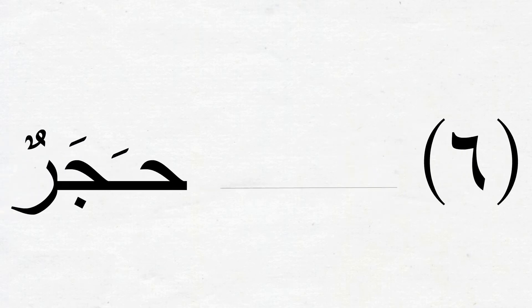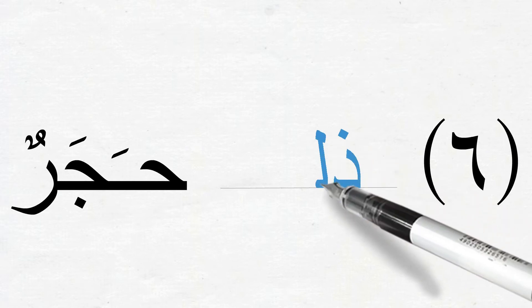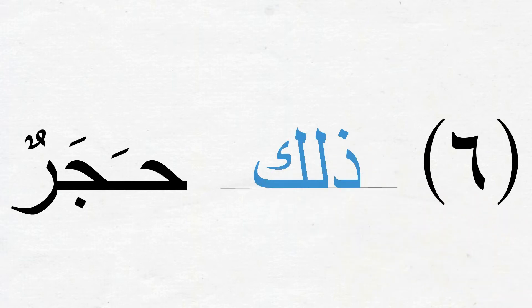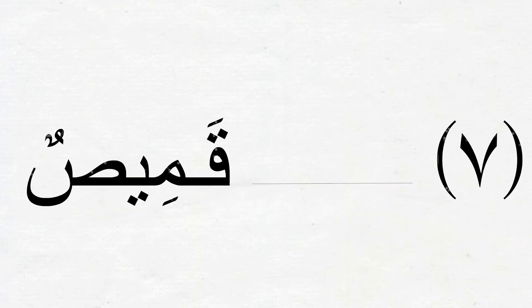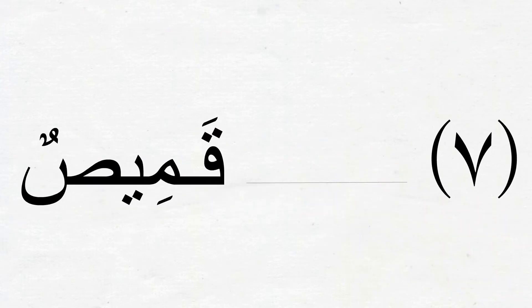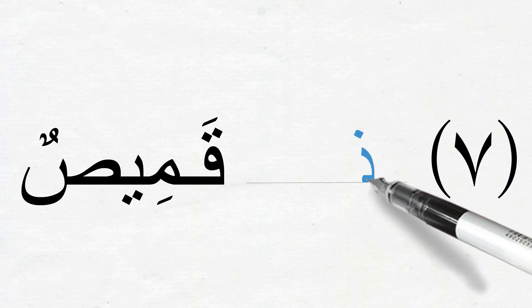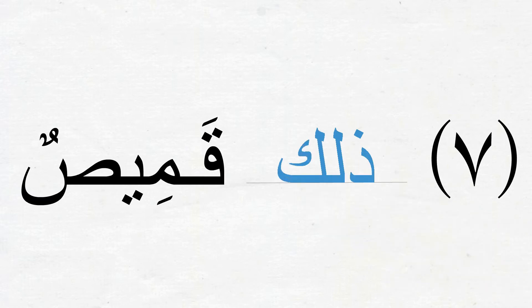Number 6: حَجَرٌ means 'a stone'. With حَجَرٌ we will use ذَٰلِكَ — ذَٰلِكَ حَجَرٌ, that is a stone. Number 7: قَمِيصٌ means 'a shirt', another مُذَكَّر اسم, so we use ذَٰلِكَ again — ذَٰلِكَ قَمِيصٌ, that is a shirt.